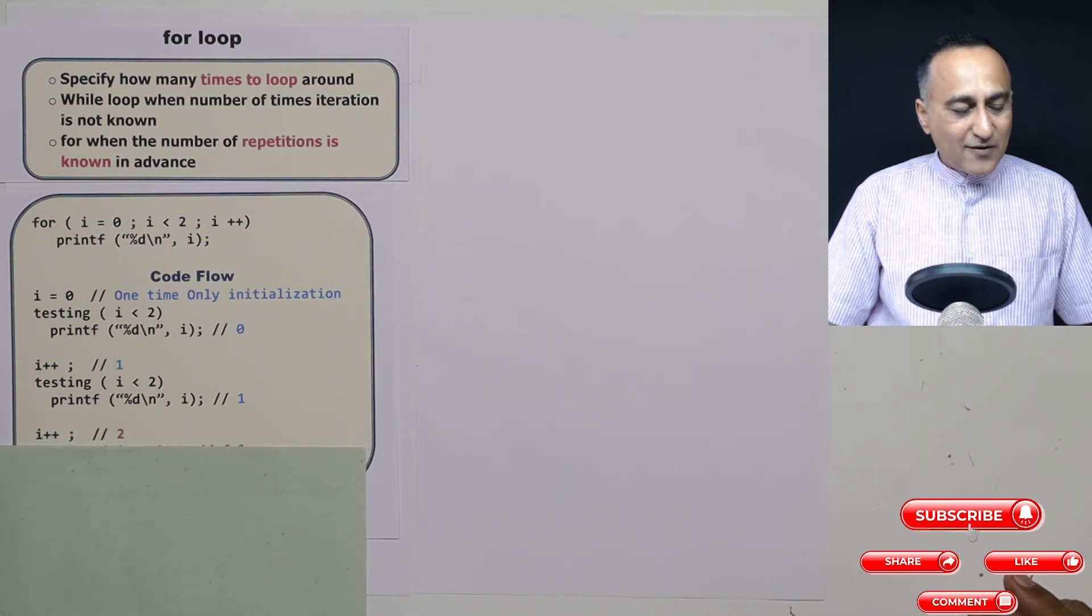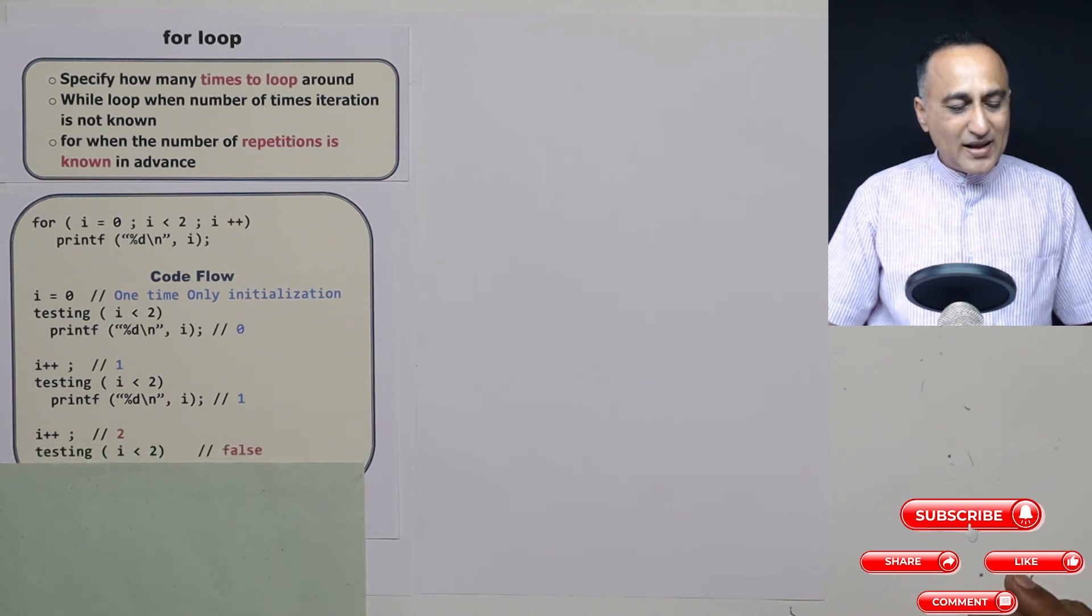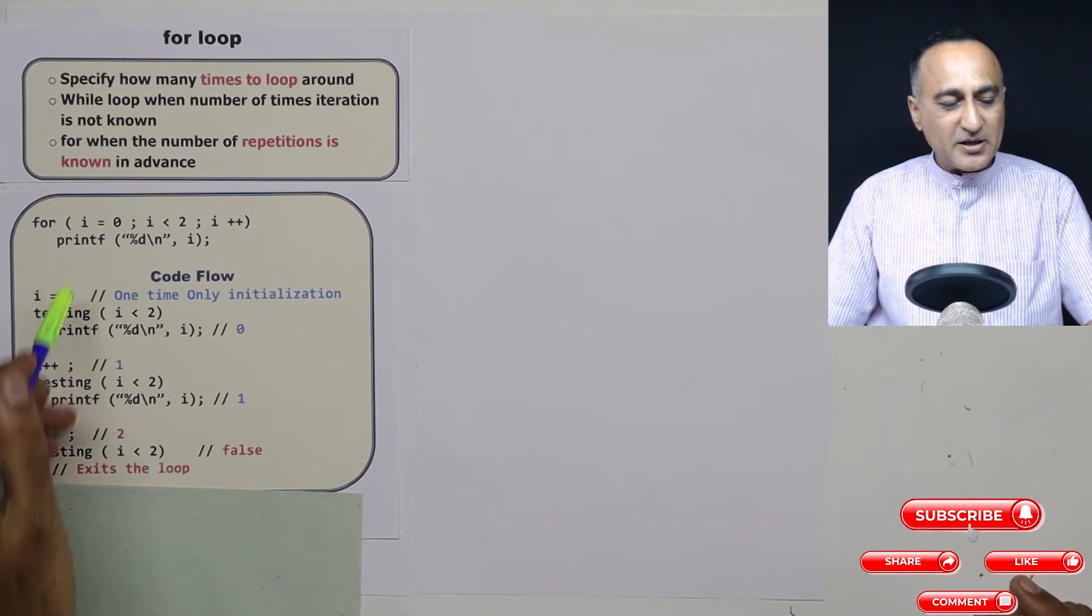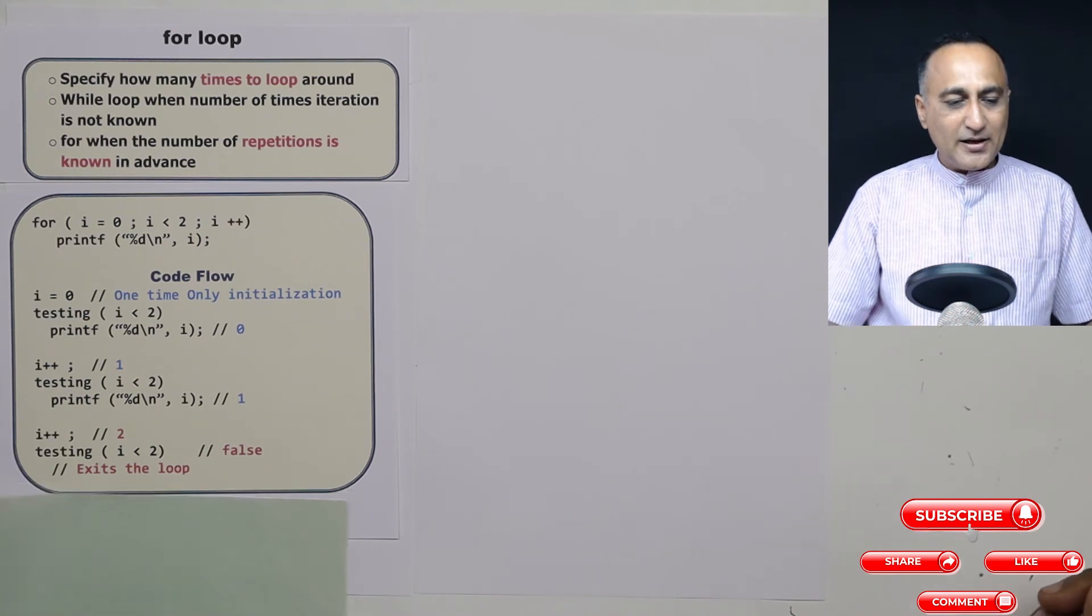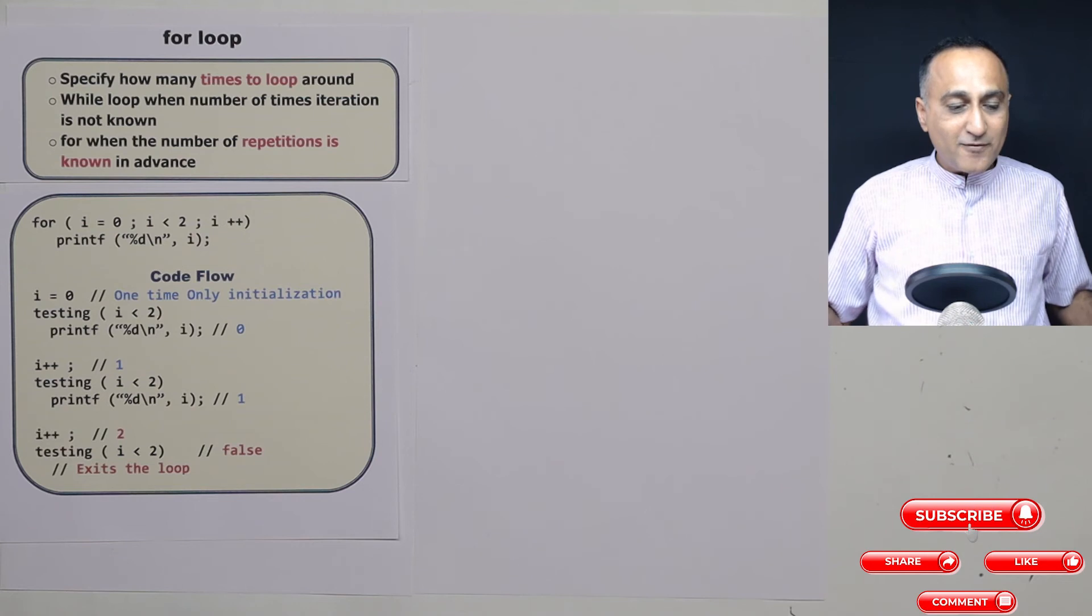Then after that i is again increased by one, i becomes two. Now is two less than two, this condition is certainly false. So it will not do any further processing of the print statement. And it will exit the loop. So I hope this has given you an idea about the working of the for loop.